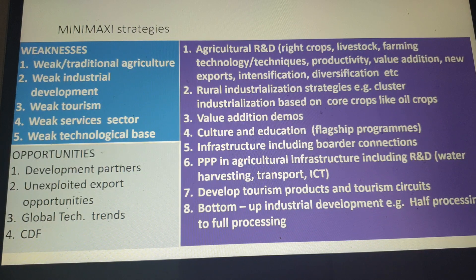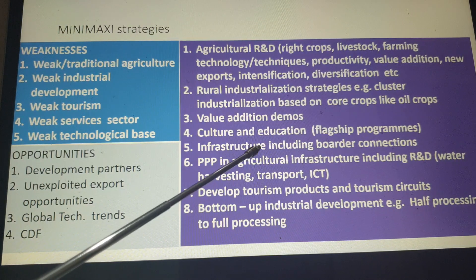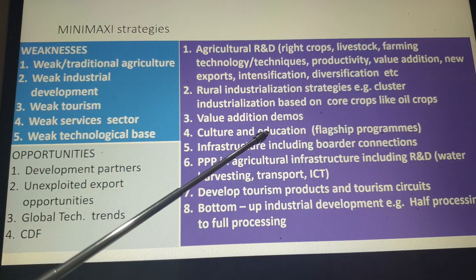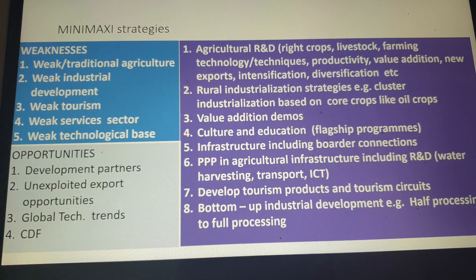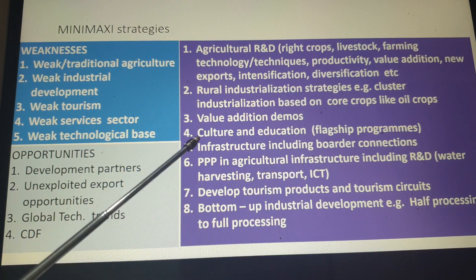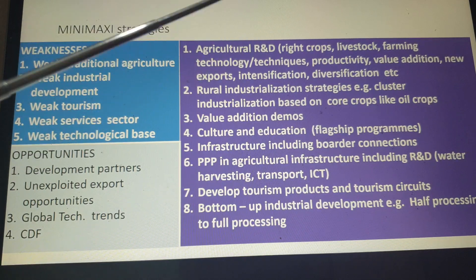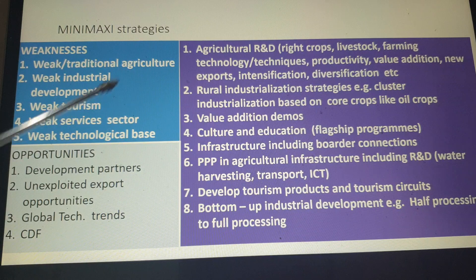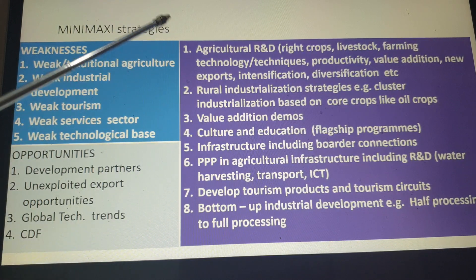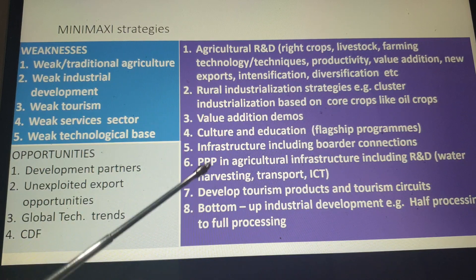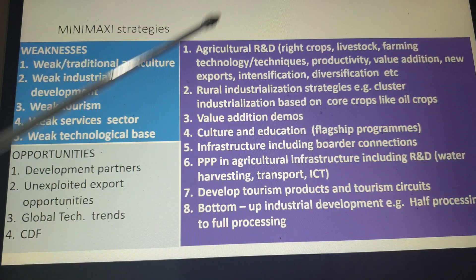Value addition demonstrations — why should Bungoma send its tomatoes to be processed in Naivasha and then bring back tomato sauce? Culture and education: we are developing education at least at the tertiary level. Why not flagship programs — in processing, green agriculture, for example? Our tertiary institutions should develop flagship programs that help produce techniques and technology for agriculture. Infrastructure, including border connections — our borders need to facilitate smooth border flow for the non-traditional export destinations we are seeking. Private-public partnerships in agriculture, water harvesting, transport, ICT, and so forth.